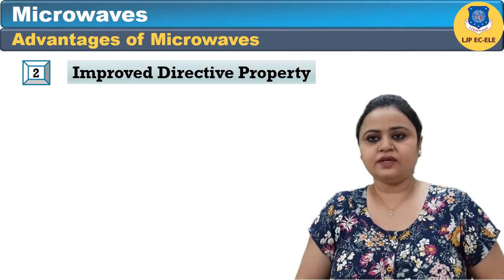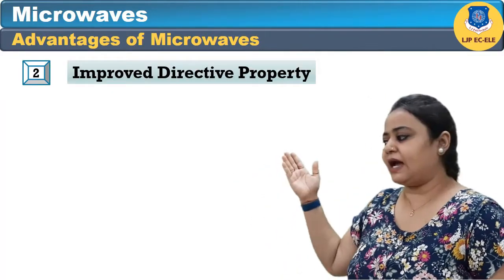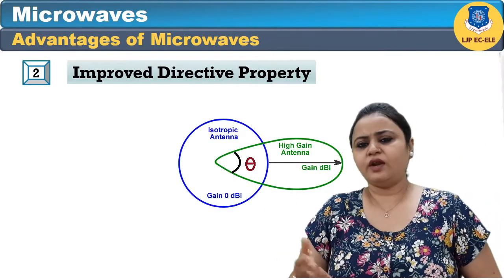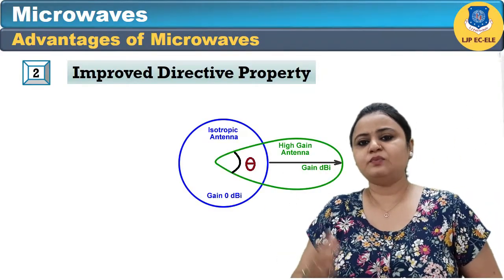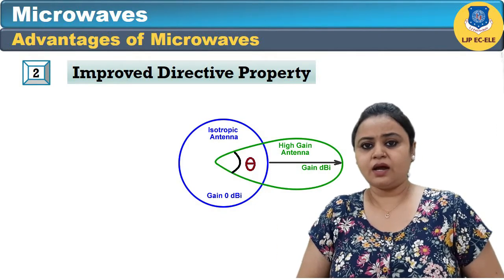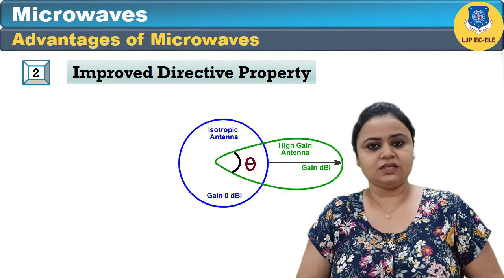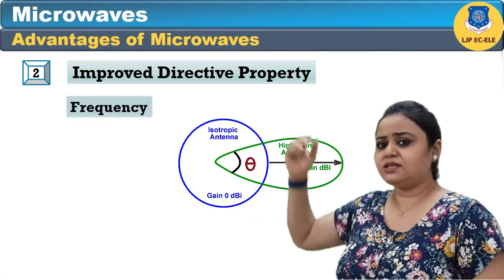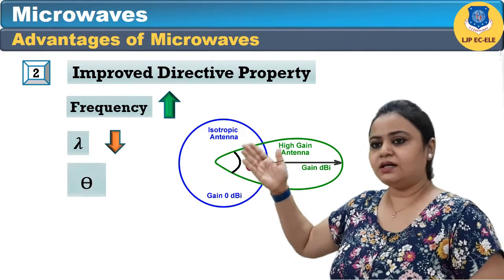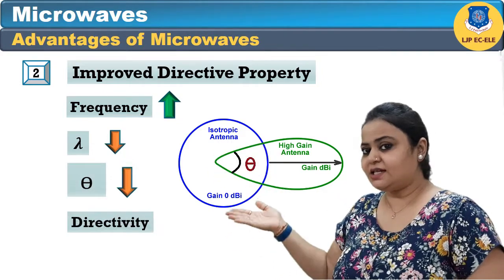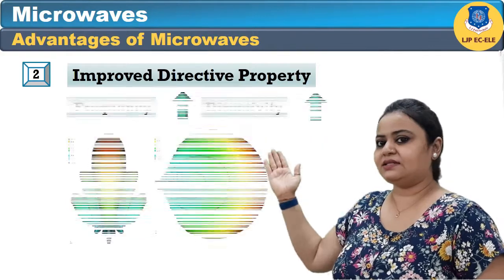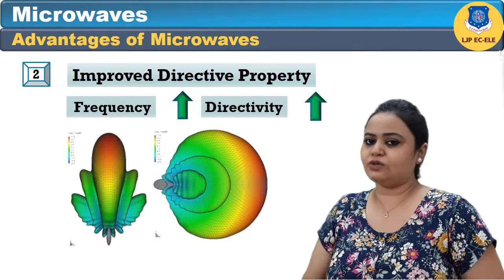The second important advantage of microwaves is improved directive properties. Mobile communication, for example, is point-to-point communication, which requires a very high directivity antenna. As frequency increases, wavelength decreases, theta decreases, which increases the directivity. We can compare this directivity on the basis of these two diagrams.